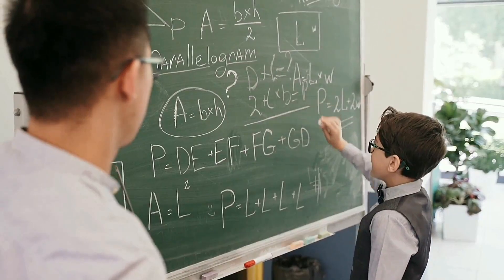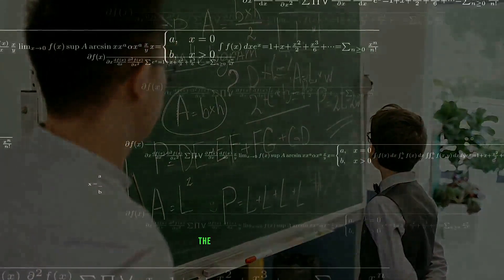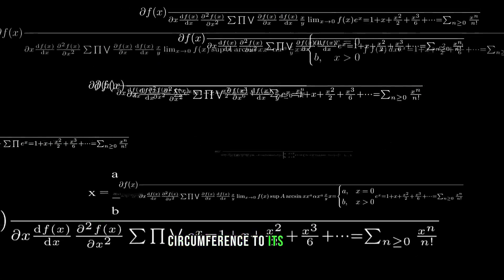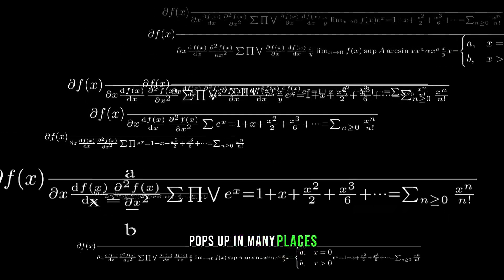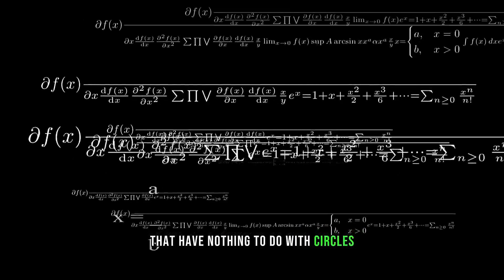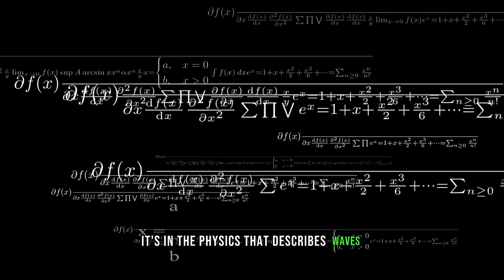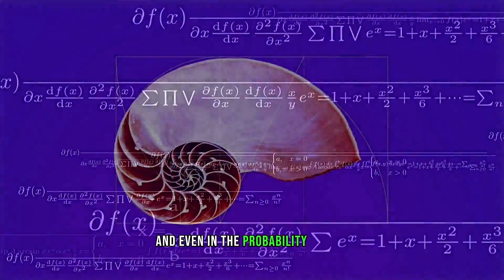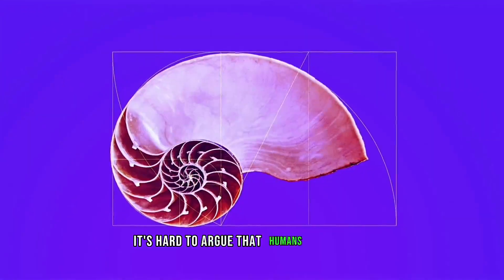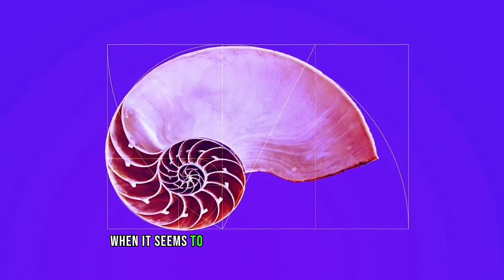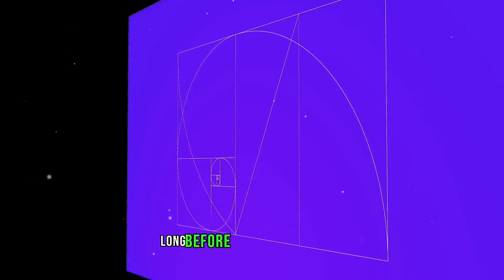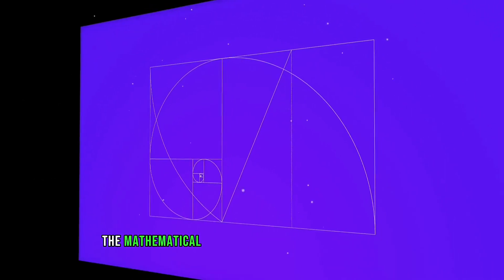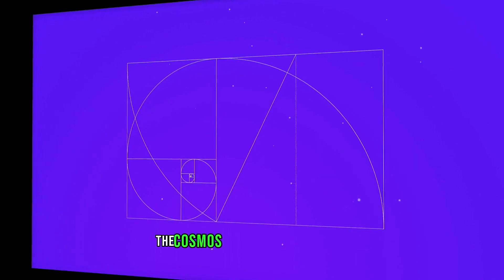And then there's pi. This irrational number, the ratio of a circle's circumference to its diameter, pops up in many places that have nothing to do with circles. It's in the physics that describes waves, the geometry of the great pyramids, and even in probability theory. It's hard to argue that humans invented pi when it seems to have been present in the universe long before we started counting.